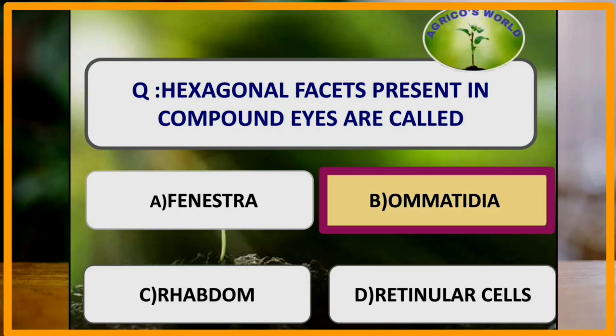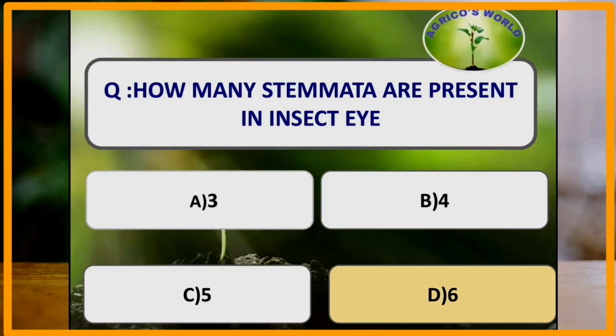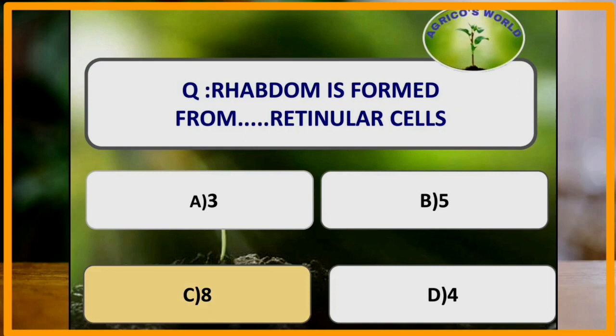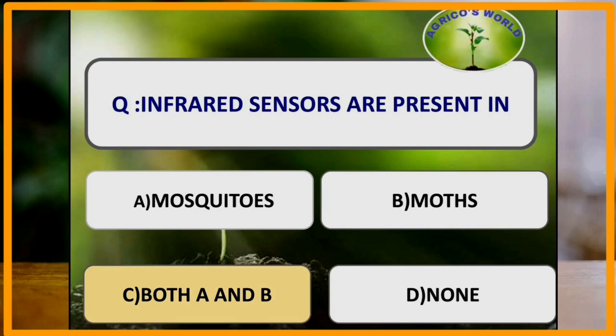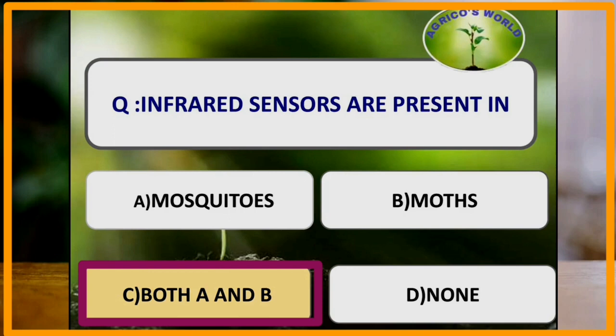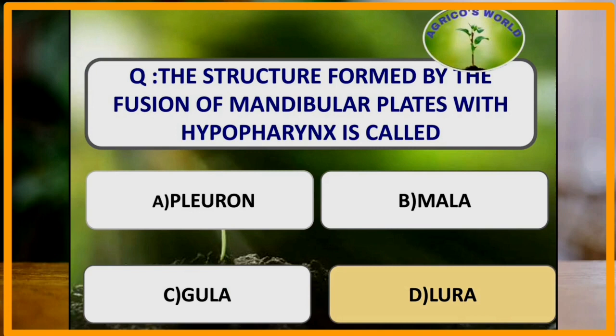How many stemmata are present in an insect eye? In an insect eye, 6 stemmata are present. Rhabdom is formed from how many retinal cells? Rhabdom of the insect eye is formed from 8 retinular cells. Infrared sensors are present in which of the following insects? Infrared sensors are present in both mosquitoes and moths. The structure formed by the fusion of mandibular plates with the hypopharynx is called lorum. It is well developed in Homoptera.